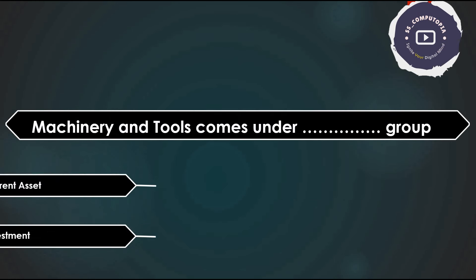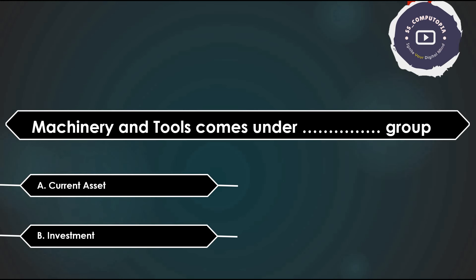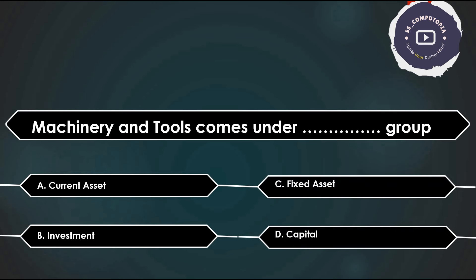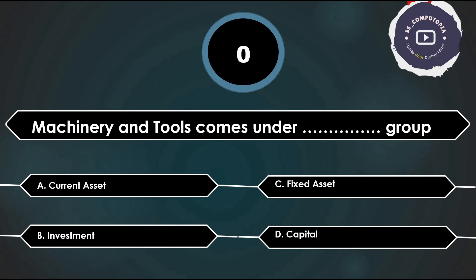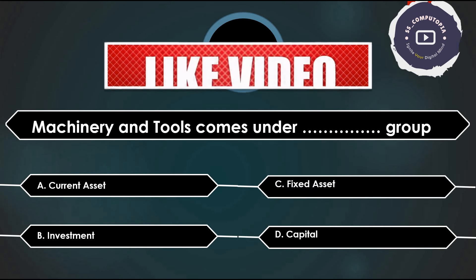Machinery and tools come under which group — current asset, investment, fixed asset, or capital? Answer is Fixed Asset. Machinery and tools are long-term assets used for production, so they are fixed assets.